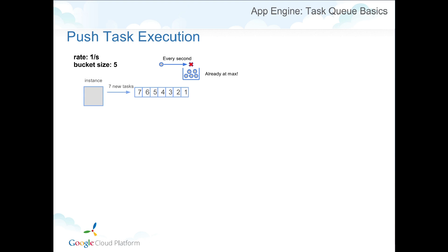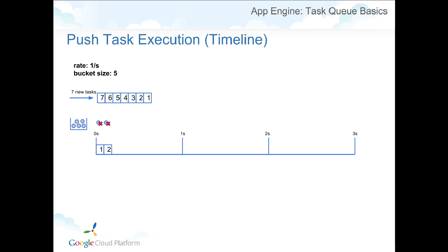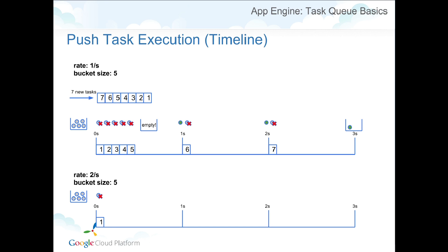Let's say you have a processing rate of one second and a bucket size of five. If you get seven new tasks, you're going to execute the first five tasks right away. But you'll have to wait one second to get another token to execute the sixth task, and again for the seventh. On a timeline, every time we execute a task we use one token, then wait for that token to come back and fill up the bucket again. If we increase the rate to two per second, you still consume the same five tokens right away, but you get a new token every half second. So this is how you control how frequently and quickly you execute tasks.